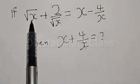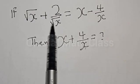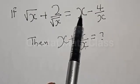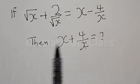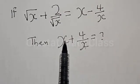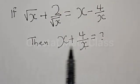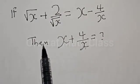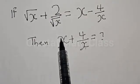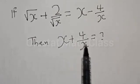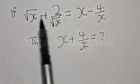If square root of s plus 2 divided by square root of s is equal to x minus 4 divided by x, then what is the value of s plus 4 divided by x? Hi everyone, welcome to my class. In today's class we want to look at how we can quickly find the value of s plus 4 divided by x from this given equation.